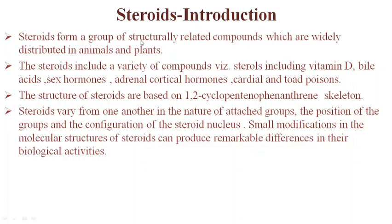Steroids form a group of structurally related compounds which are widely distributed in animals and plants. The steroids include a variety of compounds, for example: vitamin D, bile acids, sex hormones, adrenal cortical hormones, and cardenolide and toad poisons. Generally, all hormones have a steroid-like structure.